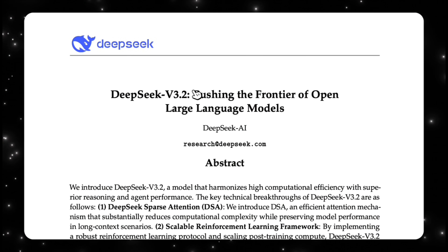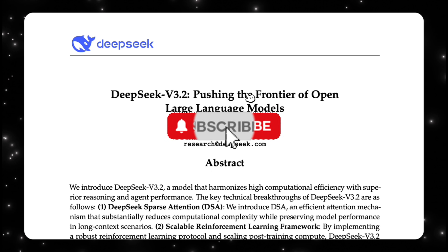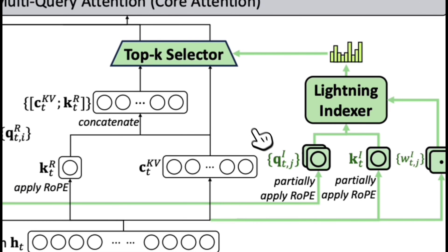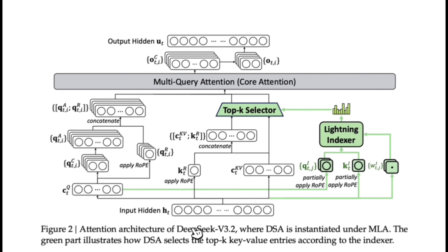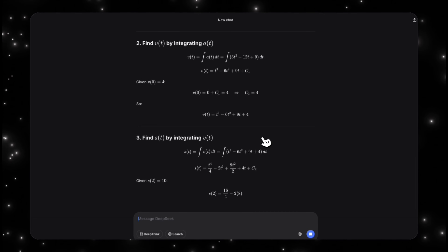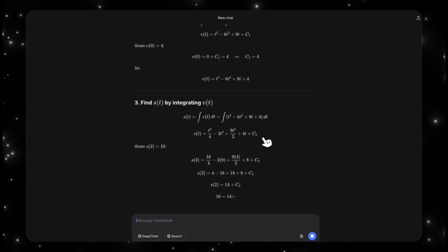Today we're breaking down DeepSeek version 3.2, the newest open source model making a serious attempt to catch up with models like GPT-5, Claude 4.5, and Gemini 3 Pro. This release isn't just a bit better — DeepSeek built a new attention system, scaled reinforcement learning massively, and created over 18,000 custom environments to teach the model how to use tools like a real agent. The paper is extremely technical, but I'll make it simple and show you a live demo.